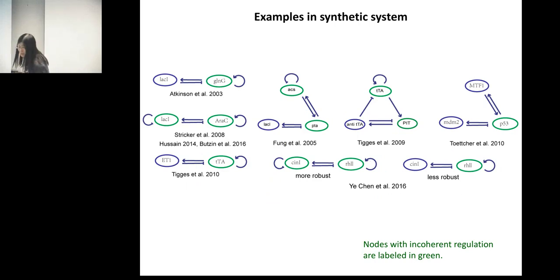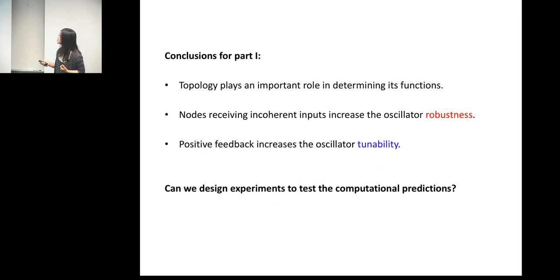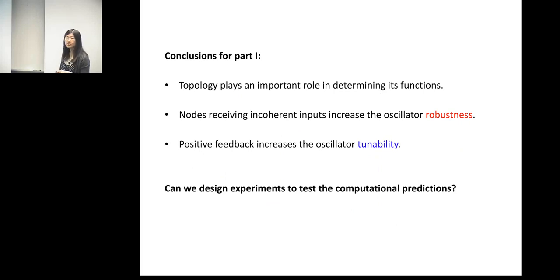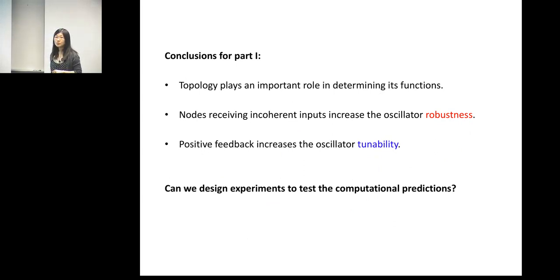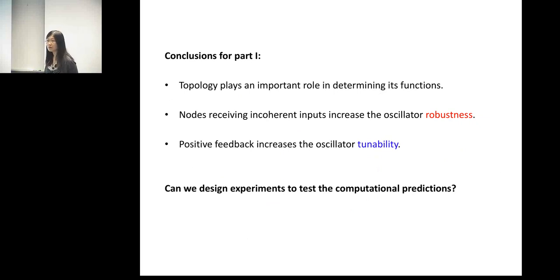To conclude for this computational part: we show that topology plays an important role in determining biological function, and specifically we find that incoherent inputs are a motif that increases oscillator robustness. We also did analysis — not shown here — showing that positive feedback increases the tunability of the oscillator. The next question for us is whether we can design experiments to test these computational predictions.